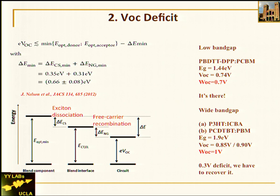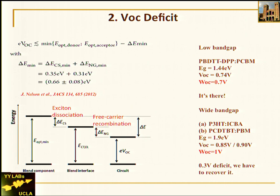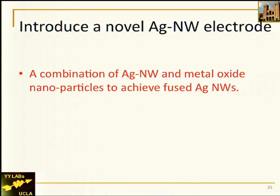For inorganic semiconductors, there is no exciton binding energy penalty, so they only lose 0.4 volts. For our low-bandgap polymer system at UCLA, we reach a Voc of about 0.74 V with near-pentacene, which is very close to the theoretical 0.7V Woc — that's good. However, for wide-bandgap polymers like P3HT, it's still about 1 volt, leaving about 0.3 volts room to improve. How to do that — that's why we have so many graduate students in the lab trying to solve the problem.